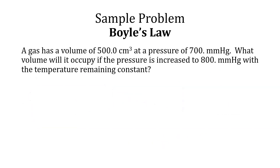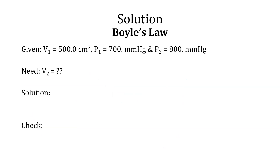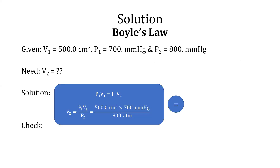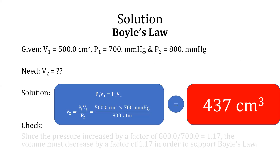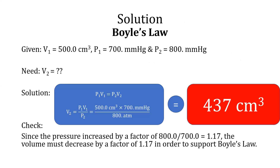A sample problem involving Boyle's Law: a gas has a volume of 500 cubic cm at a pressure of 700 mmHg. What volume will it occupy if the pressure is increased to 800 mmHg, with the temperature remaining constant? Given V1 is 500 cubic cm, P1 is 700 mmHg, and P2 is 800 mmHg, we solve for V2 using the Boyle's Law equation. V2 equals 437 cubic cm. Since the pressure increased by a factor of 1.17, the volume decreases by a factor of 1.17, supporting Boyle's Law.